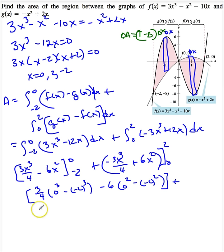I'm going to add to that negative 3 over 4 times 2 to the fourth plus 6 times 2 squared. And when I do this, I get 24.